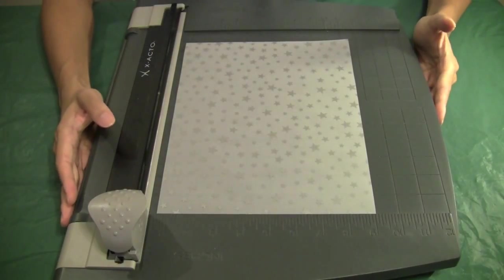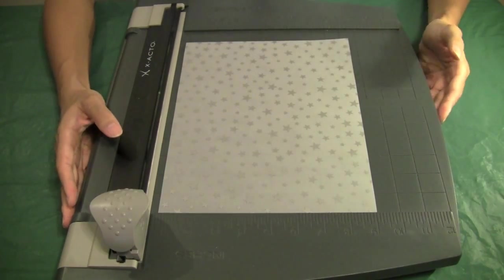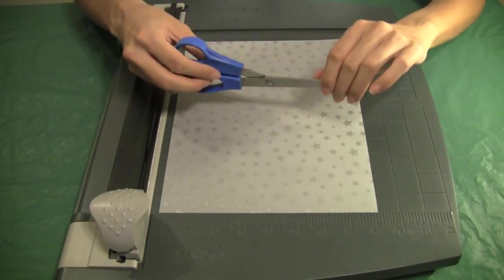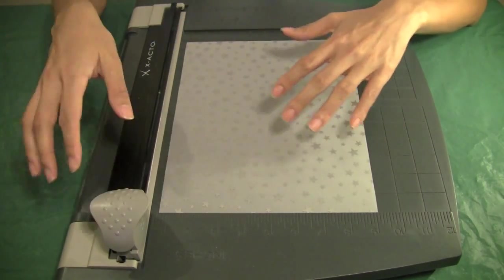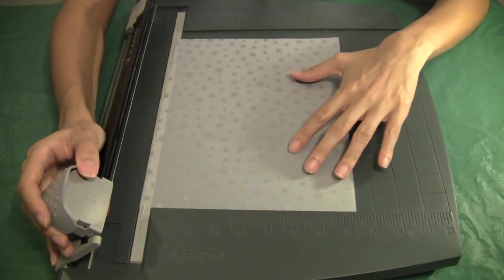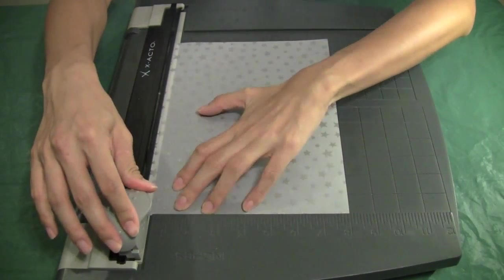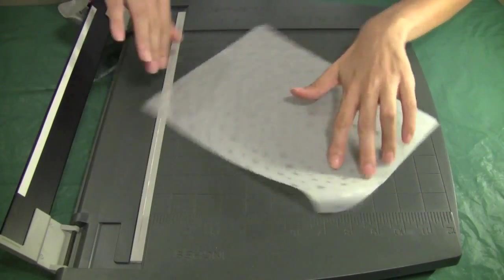Alright, we're back. I am going to cut my paper now. I've got one of these nice paper cutters at home. If you don't have one, please feel free to just use a pair of scissors and a ruler or a straight edge, an exacto knife. So I'm going to cut it to 8 inches by 7 and a half inches.